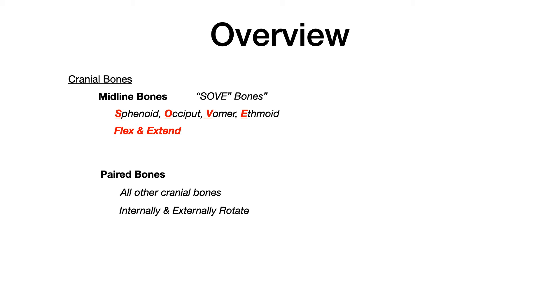The reason it's high yield for COMLEX to know midline versus paired bones is that midline bones undergo flexion and extension — cranial flexion and cranial extension. But the paired bones, which are every bone besides your SOVE bones, do internal and external rotation. This will make more sense when we talk about craniosacral motion on the next slide.